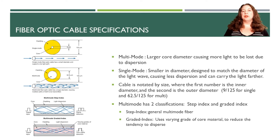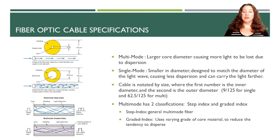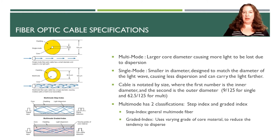When referring to cables, we refer to them by their size. Single mode is a 9 micrometer core with a 125 micrometer outside diameter. Multi-mode is 62.5 and then 125. Our outside diameter looks the same; the inside diameter depends on whether it's single mode or multi-mode.